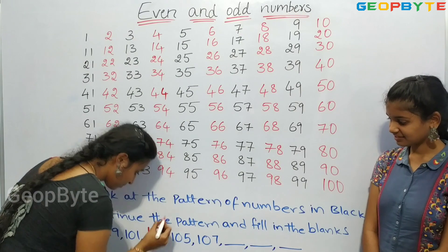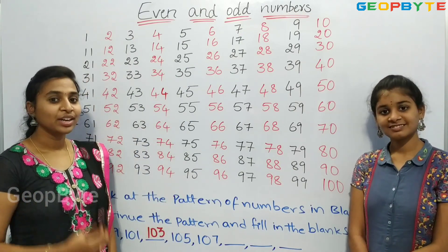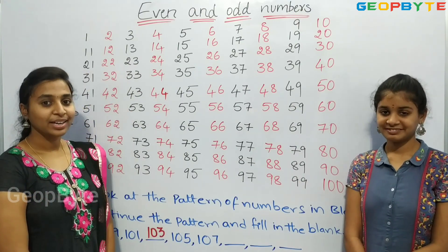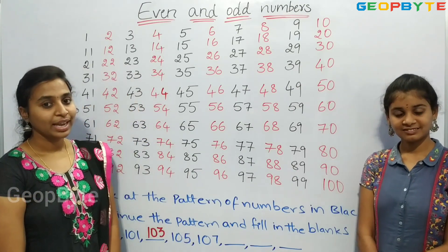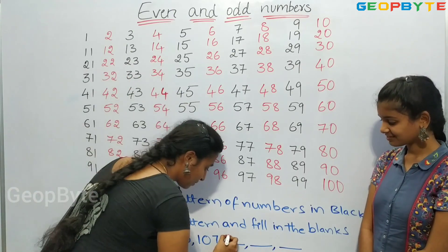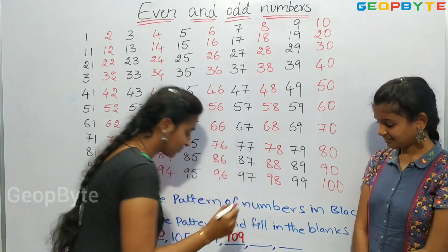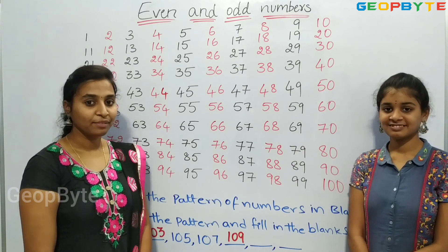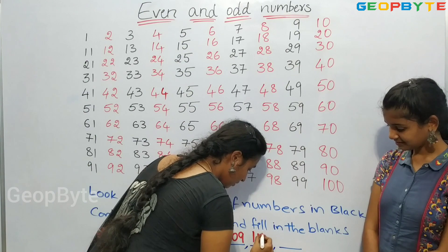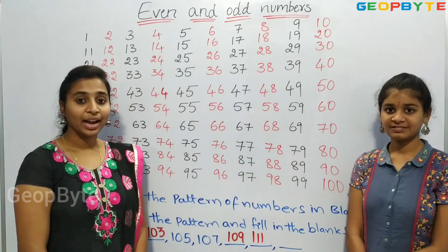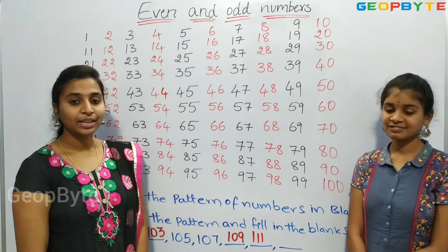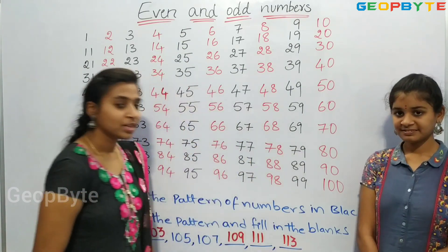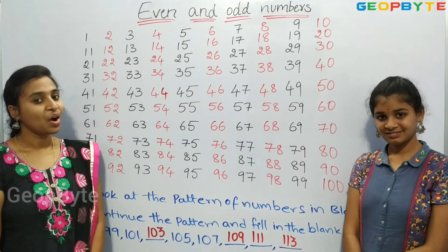If we add 2 to 103 we get 105. If we add 2 to 107 we get 109. If we add 2 to 109 we get 111. If we add 2 to 111 we get 113. Children, if you observe, these numbers are odd numbers.